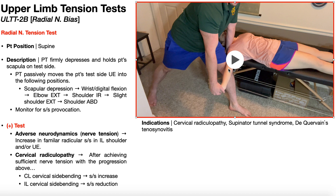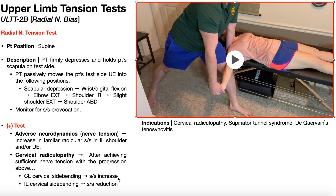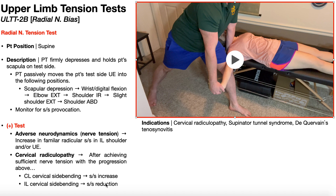But if we're specifically looking for symptoms of a cervical radiculopathy, we need to involve neck movement. After achieving sufficient nerve tension at any point in this progression, we're going to ask her to side bend her neck away from the test side — that would be contralateral cervical side bending. If her symptoms increase with contralateral cervical side bending, that constitutes a positive test ruling up cervical radiculopathy. Then I'm going to have her perform ipsilateral cervical side bending toward the test side, which theoretically should reduce symptoms — and if it does, that's in accordance with a cervical radiculopathy.